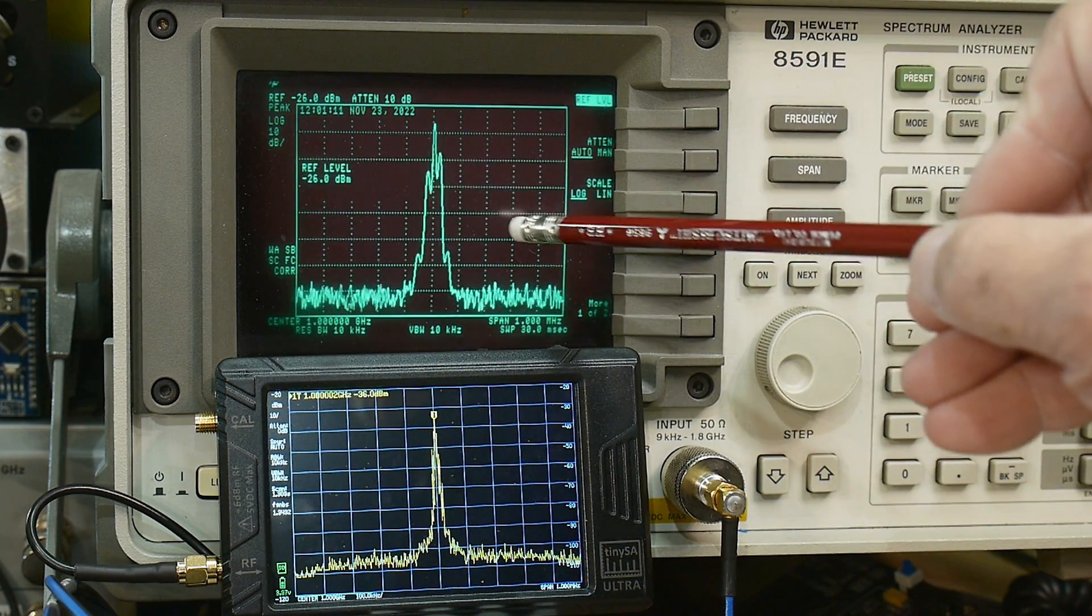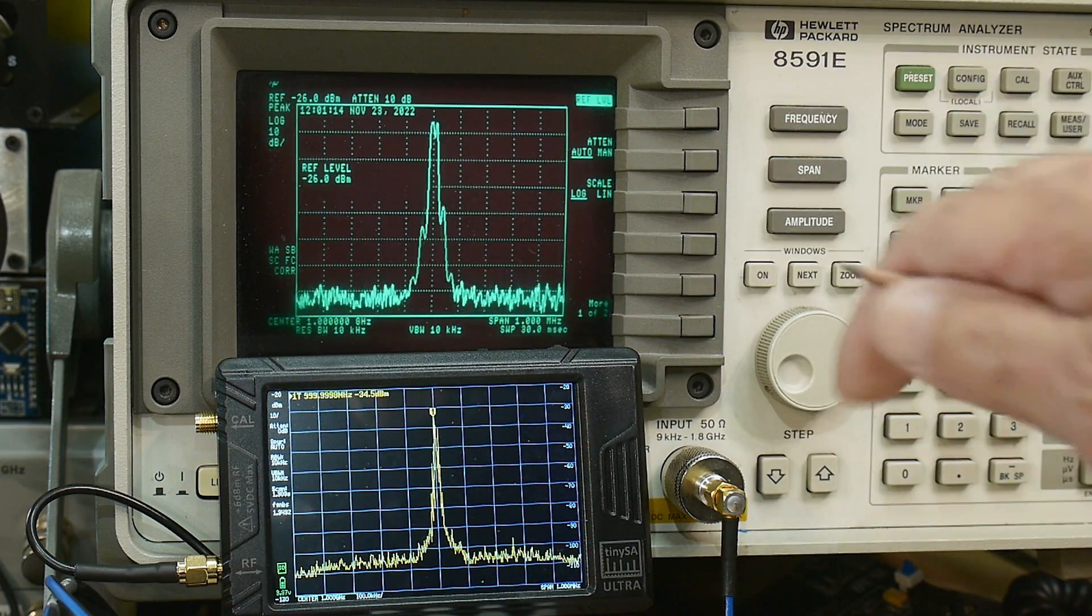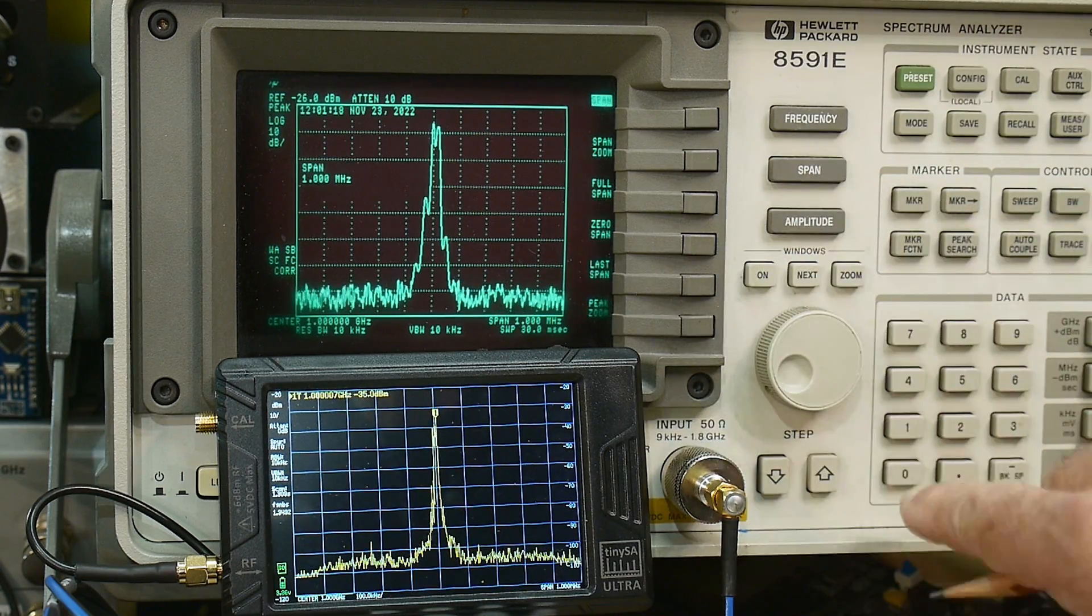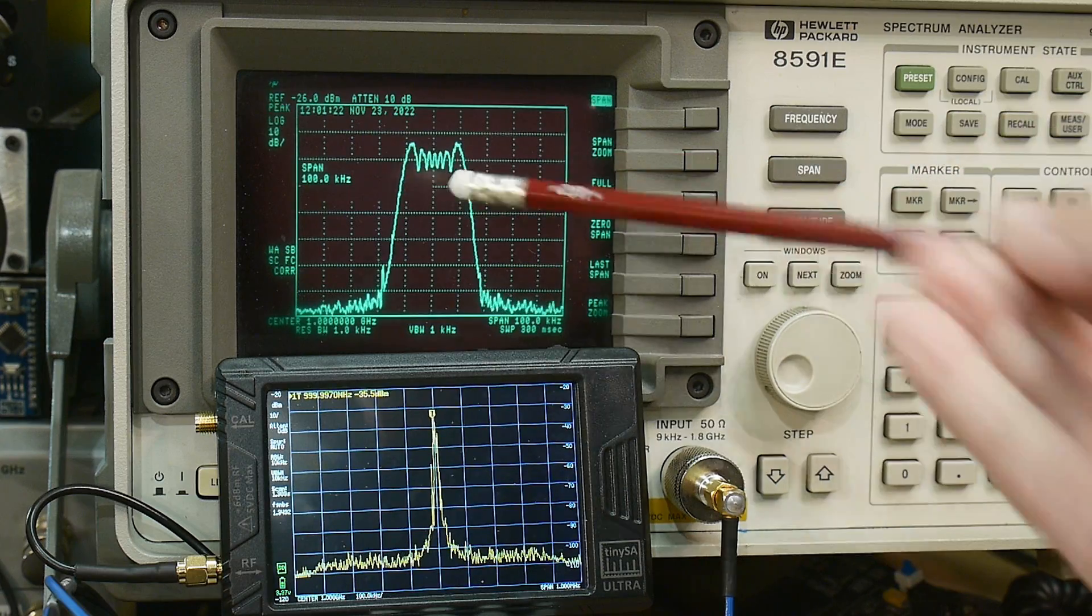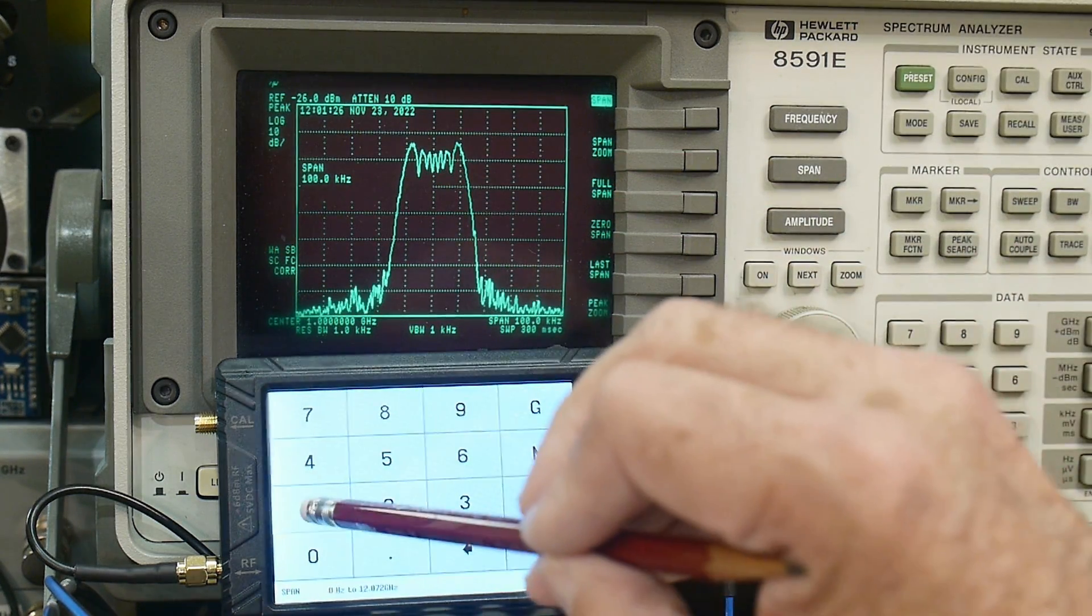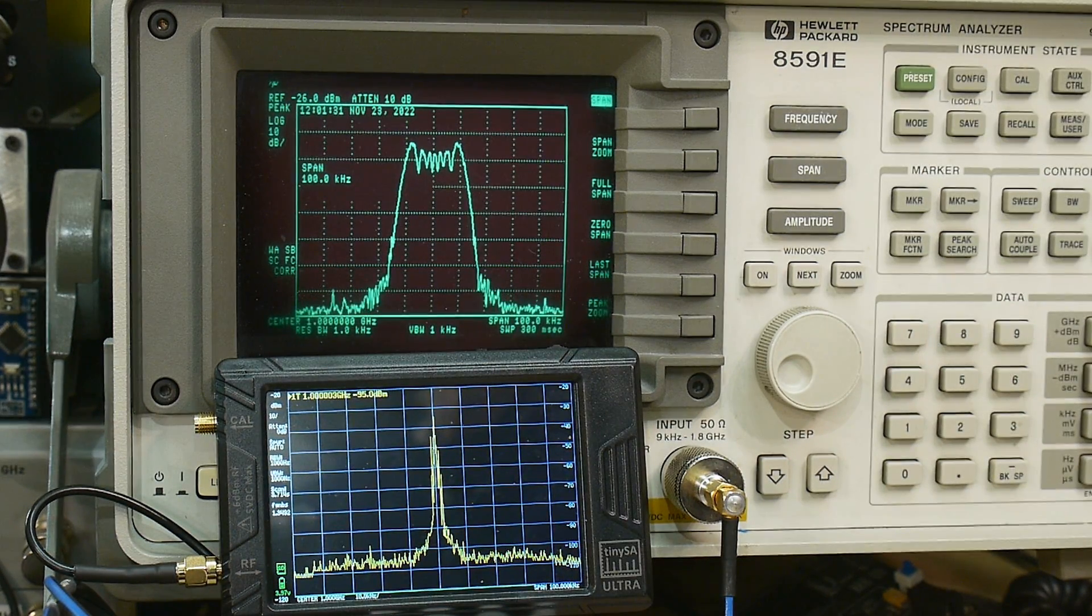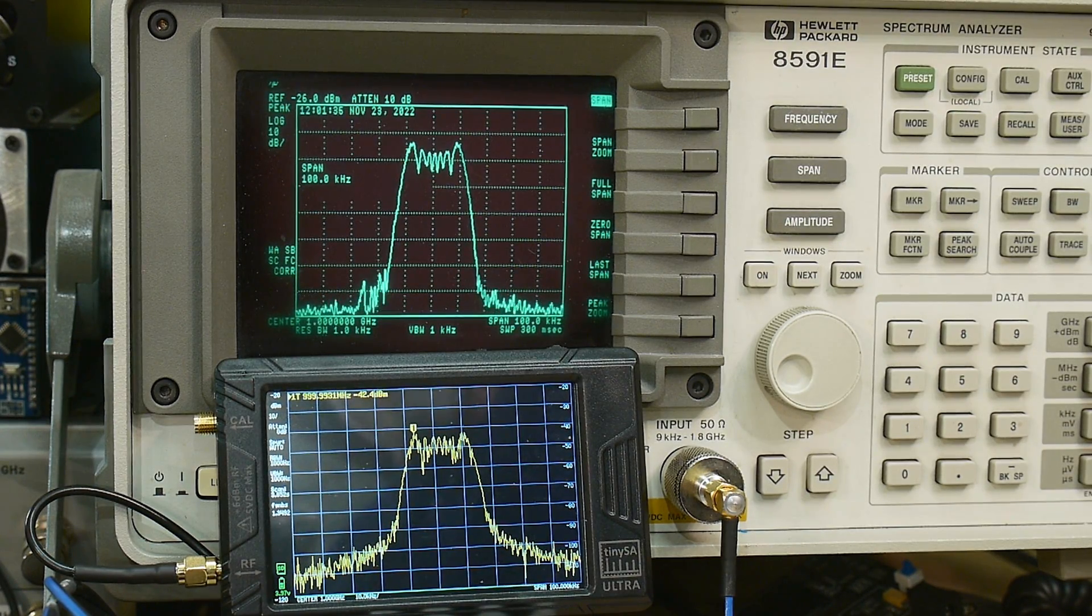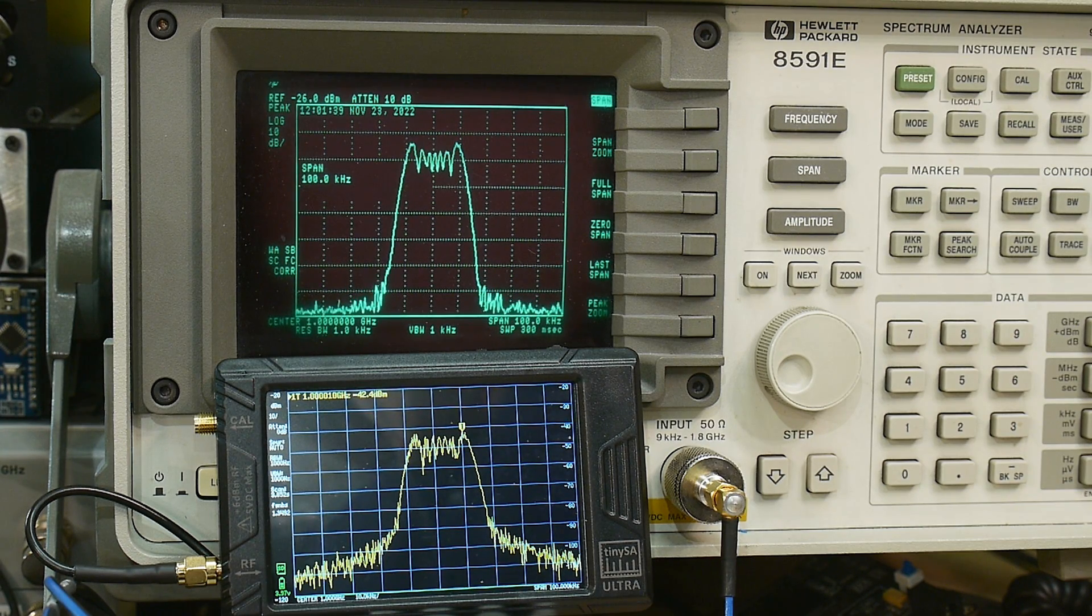And so, we can't really see it down here yet. Let's go ahead and zoom in on this. I have it at 1 megahertz. Let's do the span of 100 kilohertz, and there we go. So, we're getting nice FM. Let's hit the span here of 100 kilohertz, and there we go. So, it is operating fine up at at least 1 gigahertz.